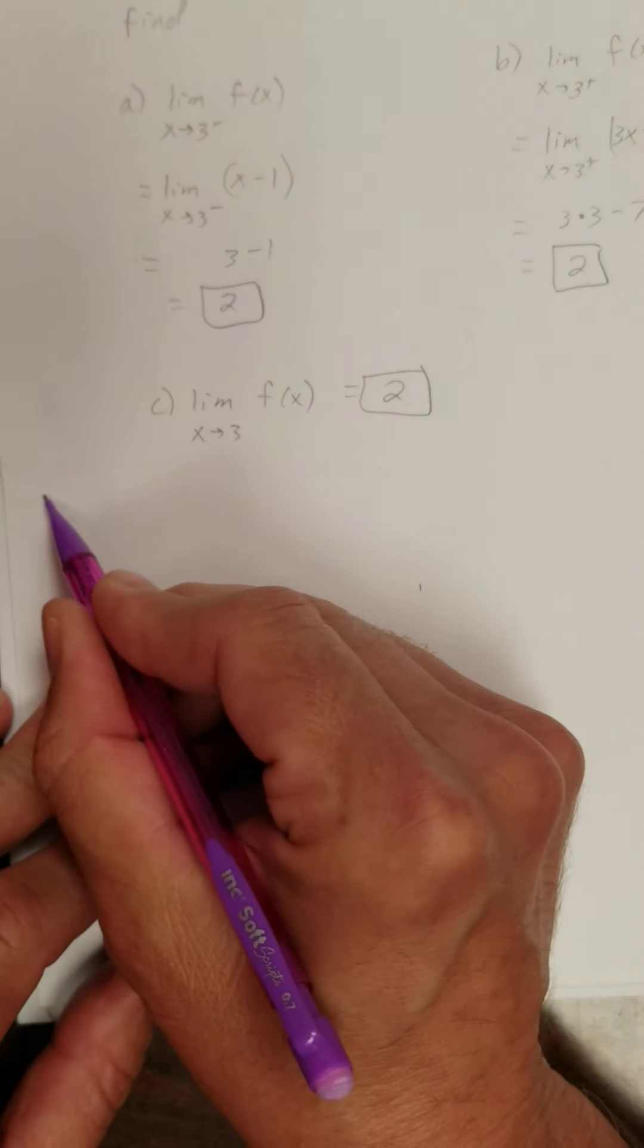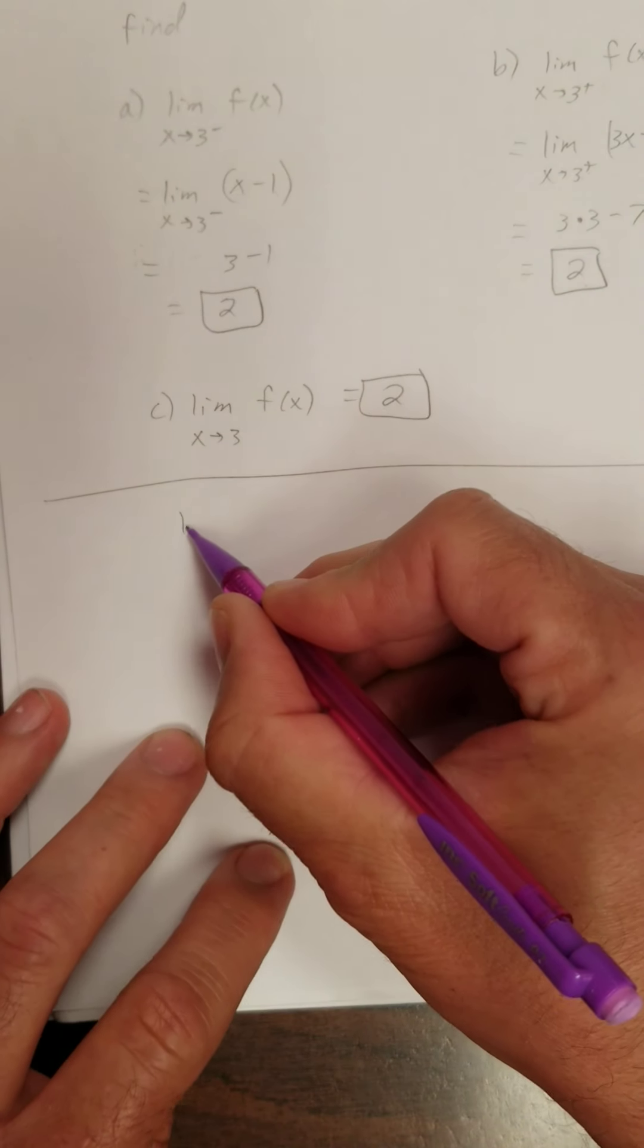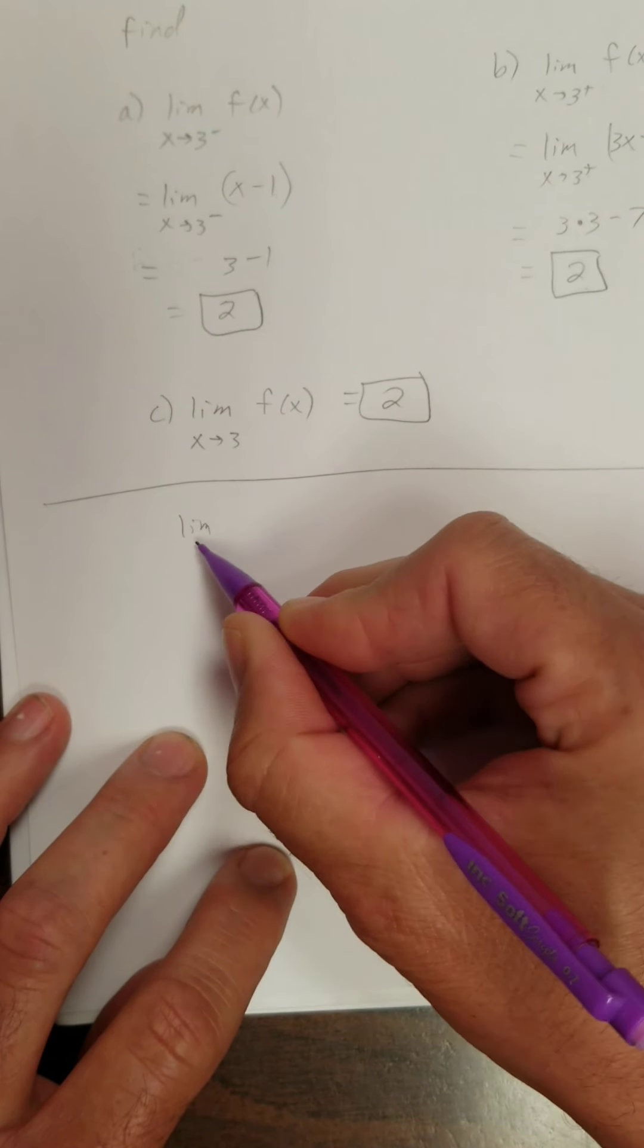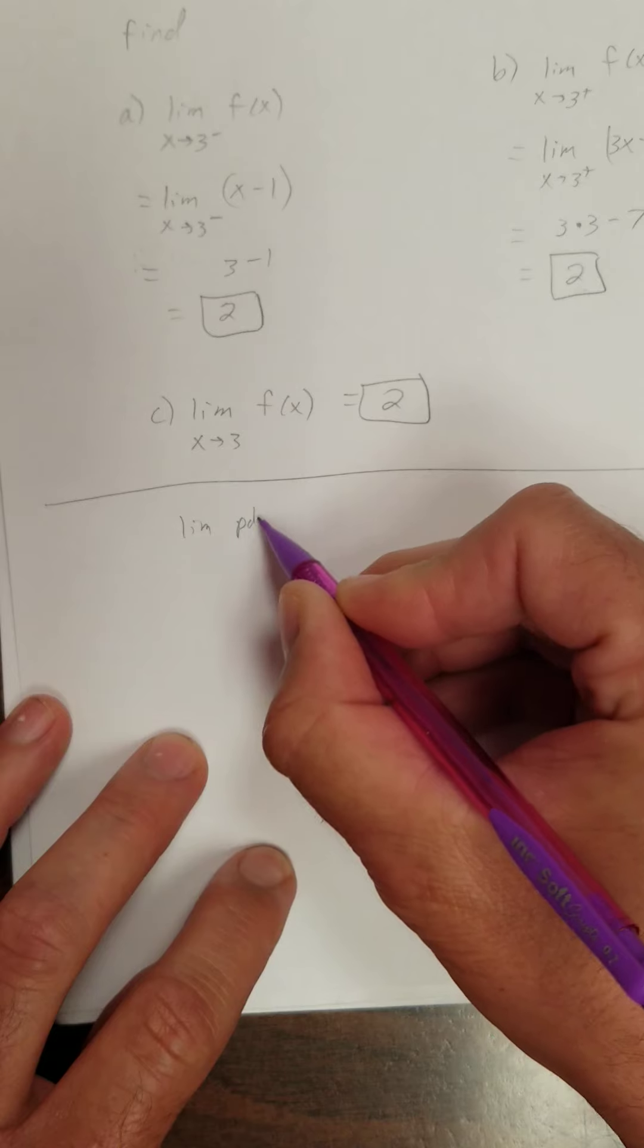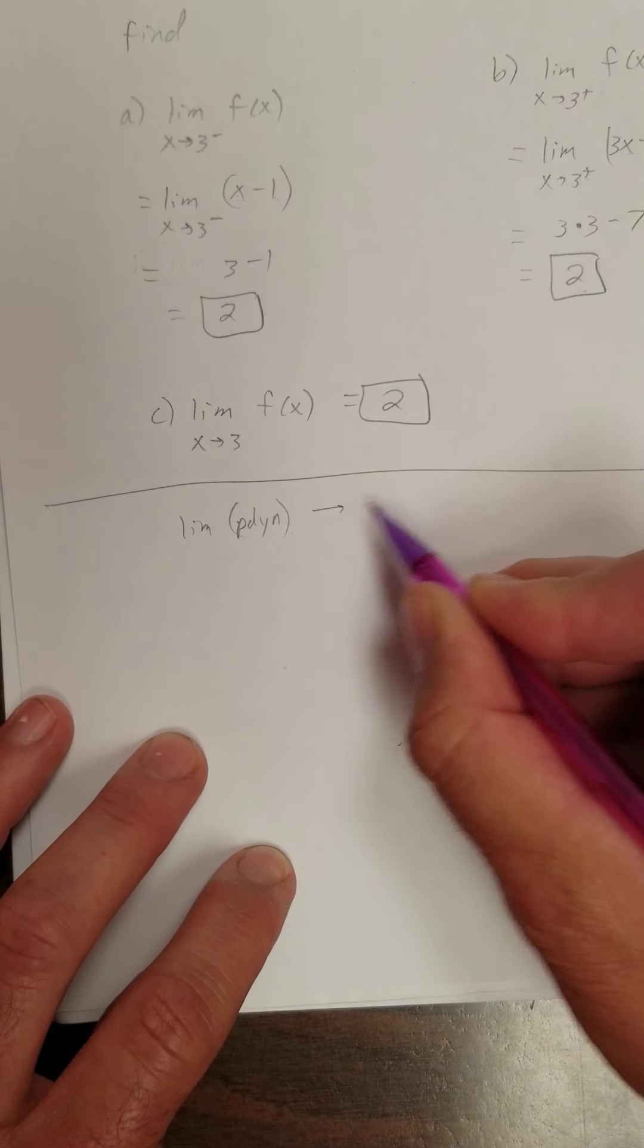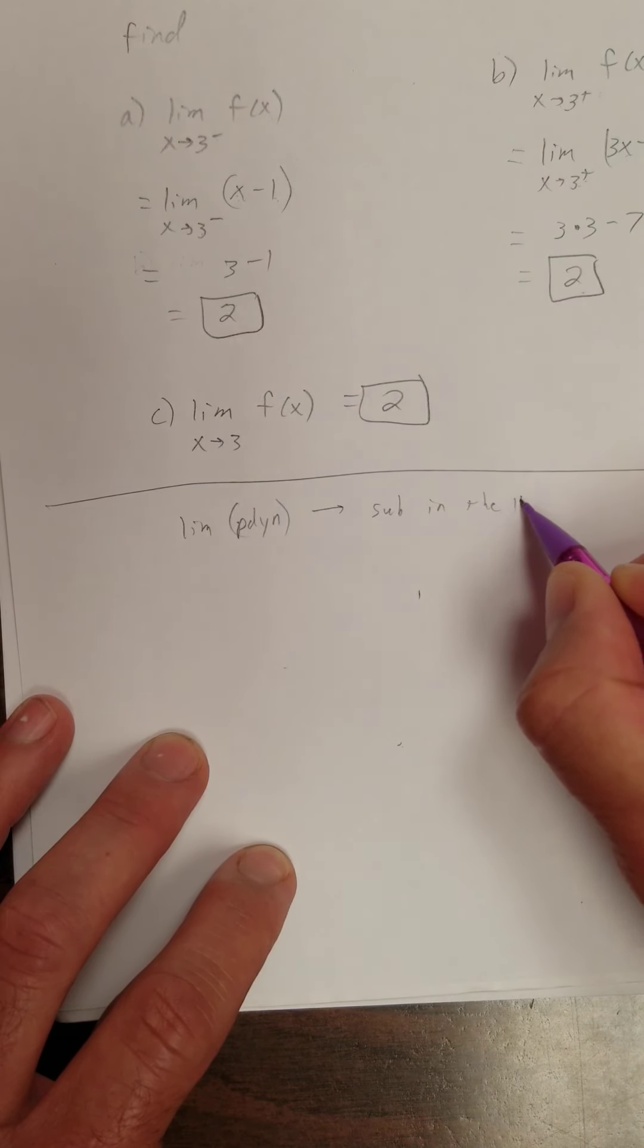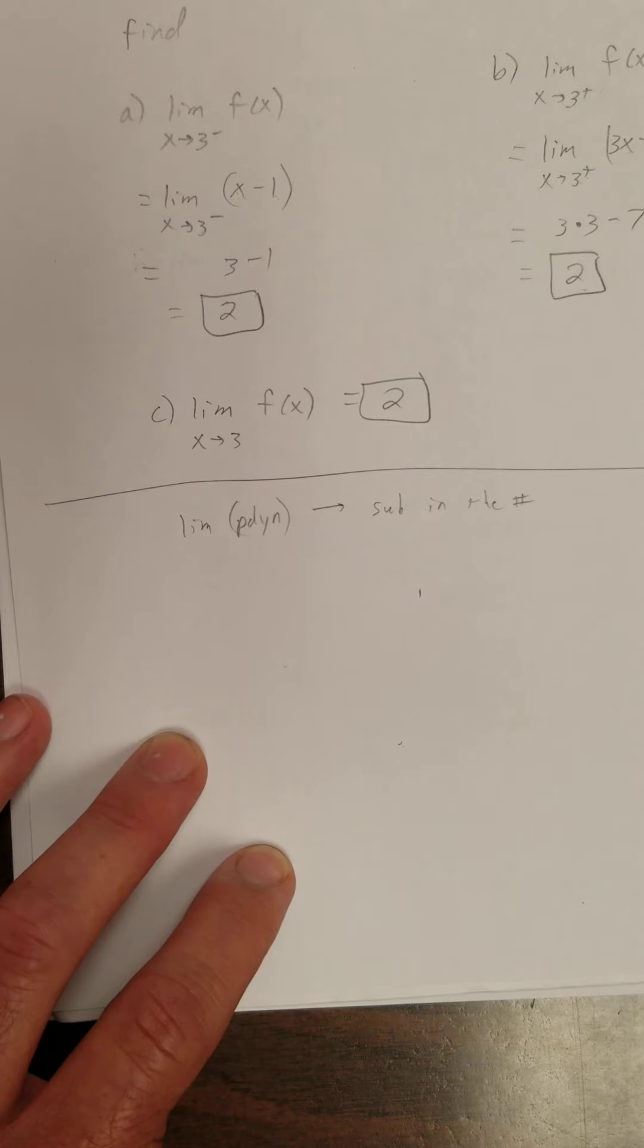So let's see, let's sum up what we learned so far. We learned if we're taking a limit of a polynomial, what do we do? Sub in the number, basically. Evaluate the polynomial at the number.